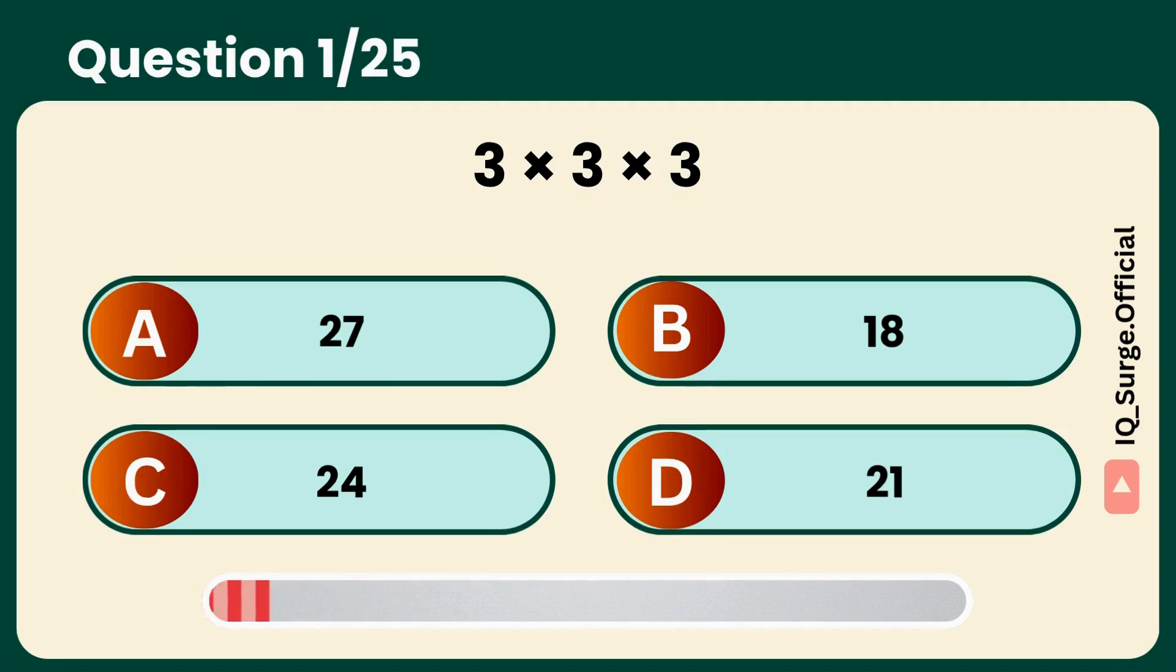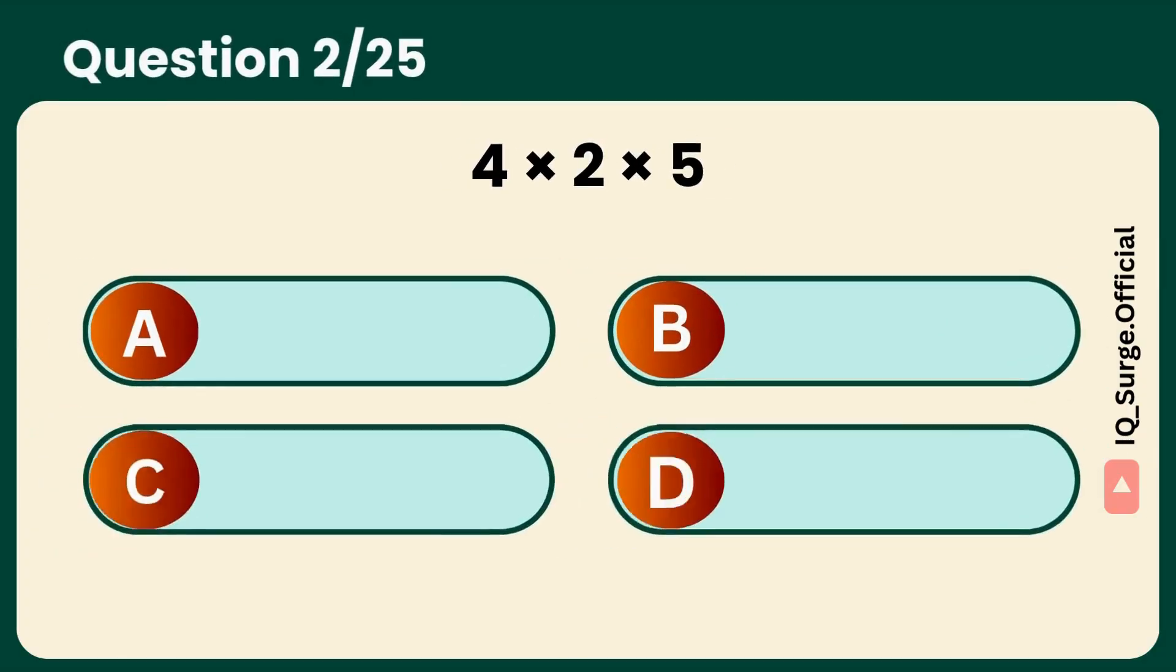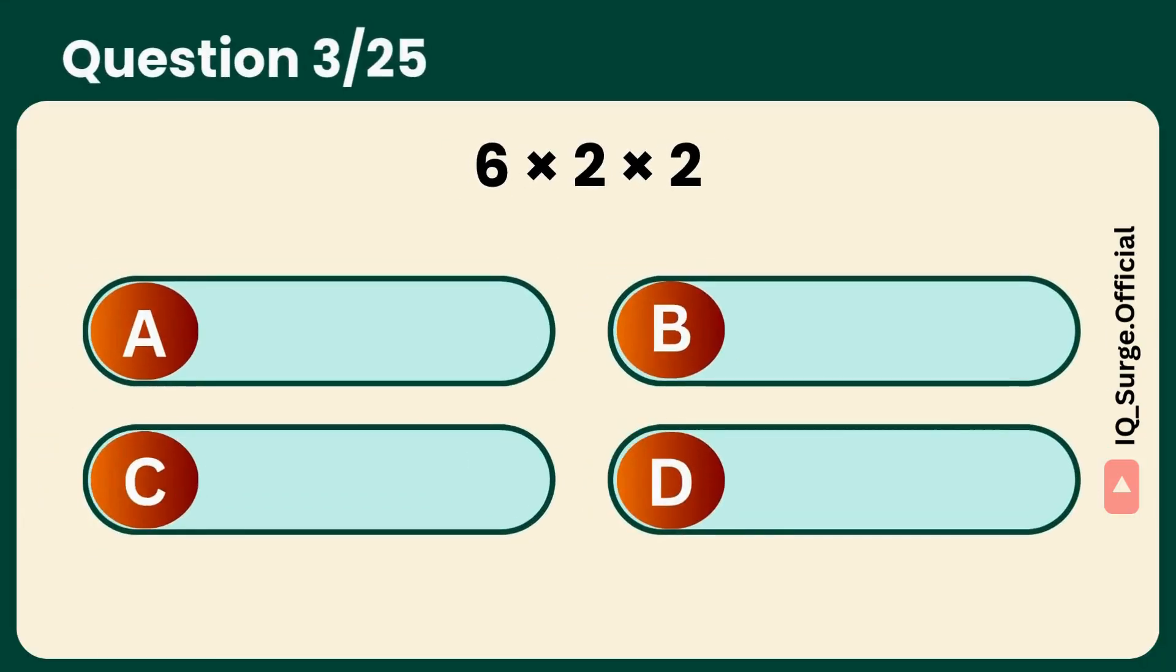Quick start, can you get it? Answer: A, 27. What is 4 times 2 times 5? Looks easy or not. Answer: C, 40. What is 6 times 2 times 2?